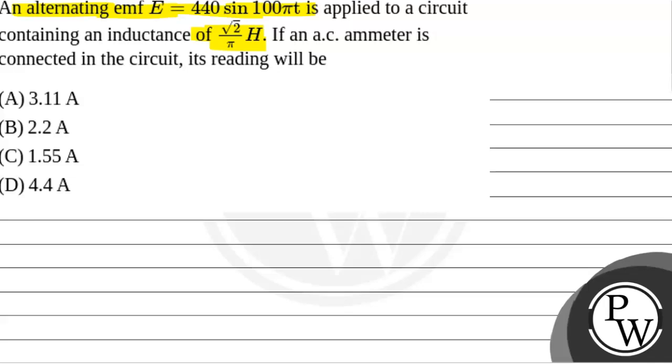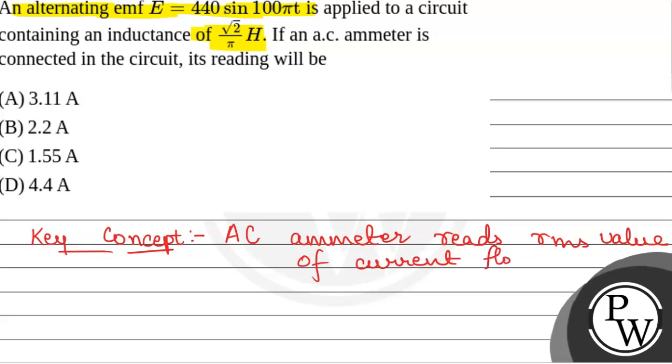First of all, we will see what will be the key concept in this question. The key concept used in this question is that an AC ammeter reads RMS value of current flowing in the circuit.